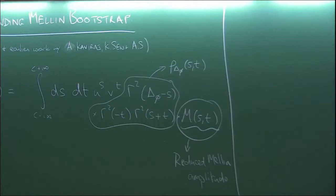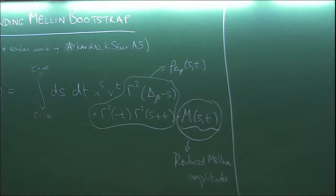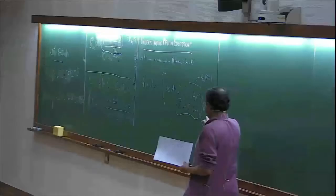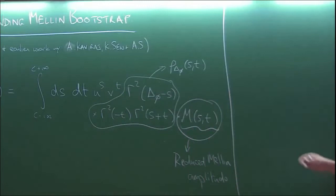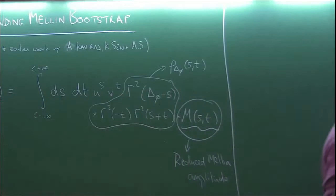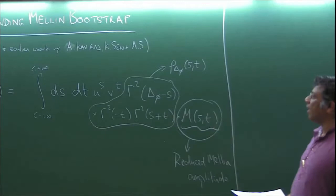This M(S,T) has a number of nice properties in general. You choose this contour in such a way that you pick up an appropriate set of poles in the amplitude. For a general CFT, it's a meromorphic function. It has a set of poles which correspond to the physical operators that are exchanged. The nice thing about writing it as a Mellin amplitude is that many of the structures that you conventionally come across in CFT have a much simpler form in Mellin space.